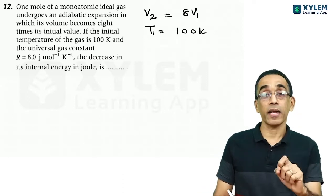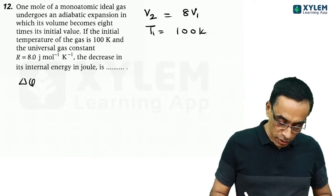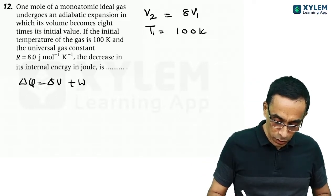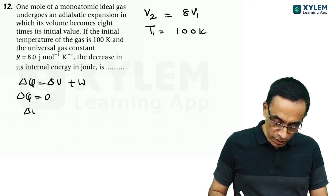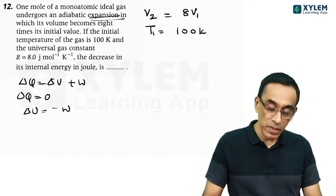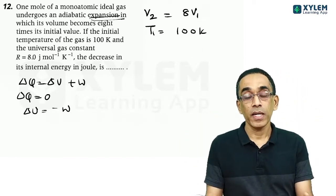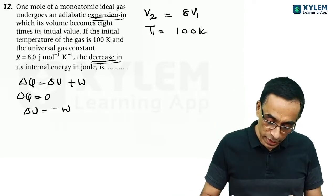We need to find the decrease in its internal energy. For adiabatic expansion we know delta Q equals delta U plus W. In an adiabatic process, delta Q will be equal to zero. So delta U is negative of W. In an expansion process, work done is positive, so change in internal energy is negative, a decrease.